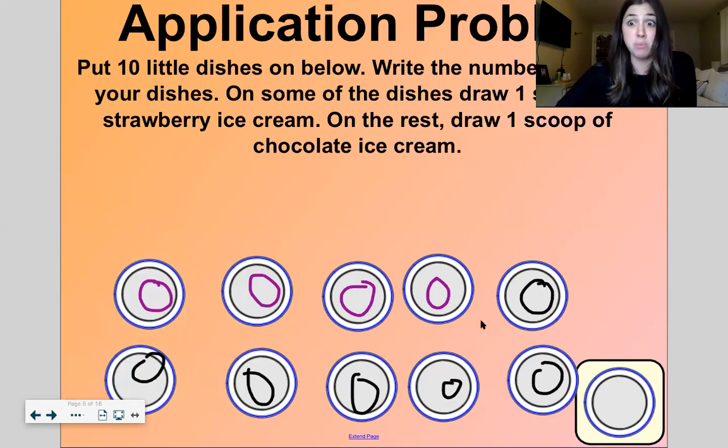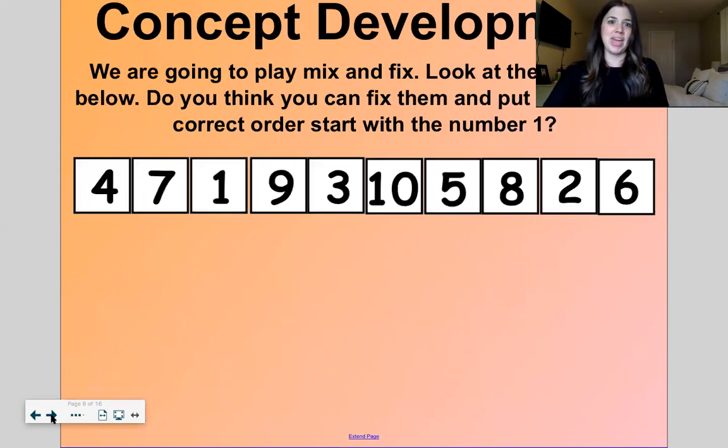Whoa, I can see now four of my dishes have strawberry ice cream. And one, two, three, four, five, six have chocolate. Hmm, I have more chocolate than strawberry. Six is greater than four. Cool, we drew six, we drew ten total scoops. Six, four strawberry, six chocolate. Four and six makes ten.